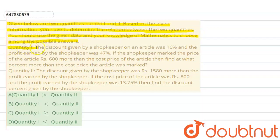Quantity I: The discount given by a shopkeeper on an article was 16% and the profit earned by the shopkeeper was 47%. If the shopkeeper marked the price of the article Rs. 600 more than the cost price, then find at what percent more than the cost price the article was marked.